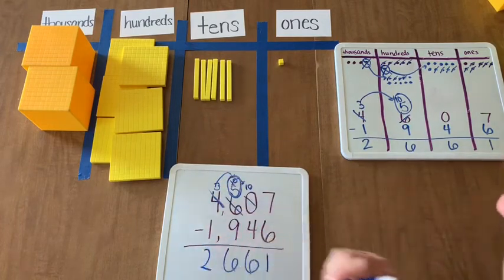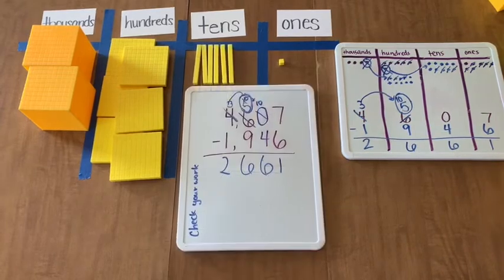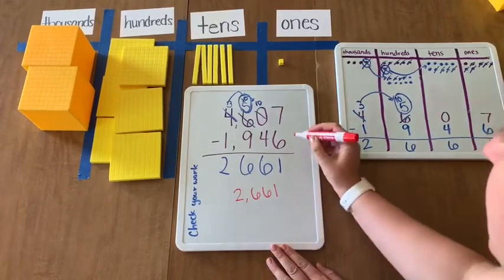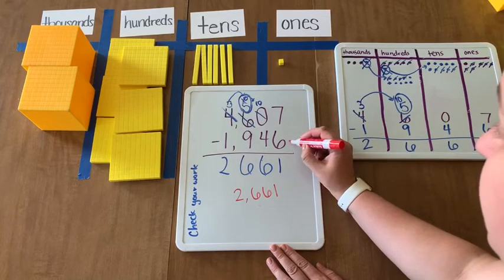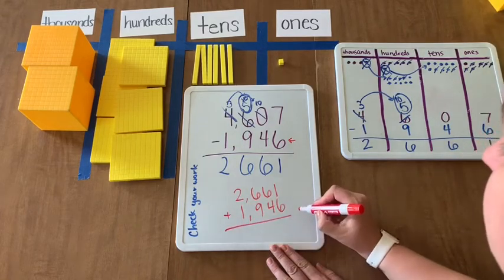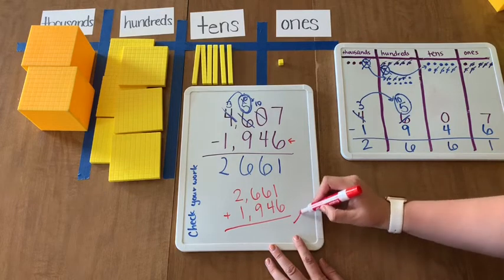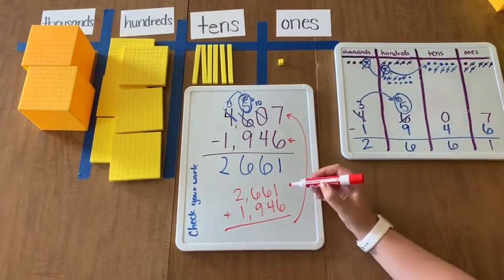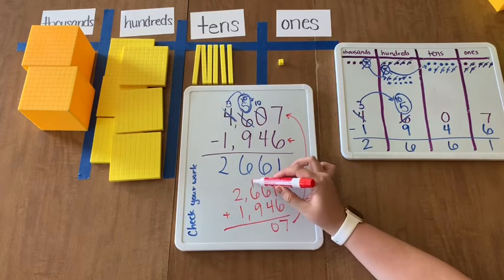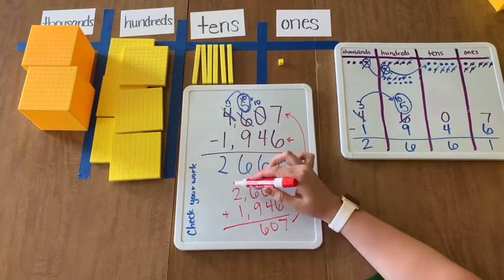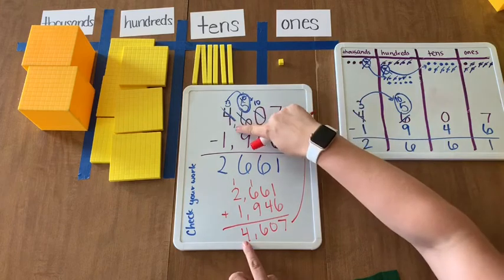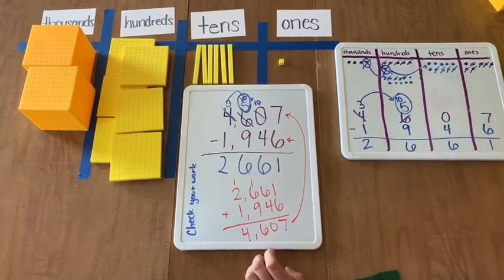3,000 minus 1,000 is 2,000. We can always check our work by taking our answer, in this case 2,661, plus the number that we subtracted, 1,946. And our goal is, our answer, if we subtracted correctly, should be the original number that we started with. So, 1 plus 6 is 7. 6 plus 4 is 10. 9 plus 1 is 10, plus 6 more is 16. 1 plus 2 is 3, plus 1 more is 4. 4,600 zero tens and seven ones is what we started with.